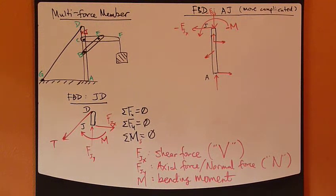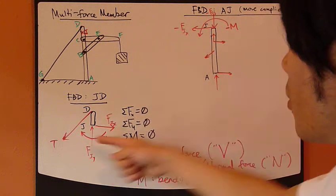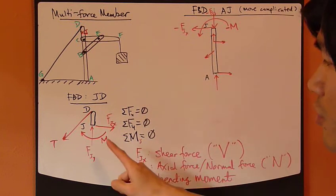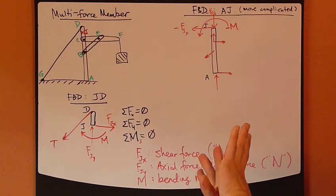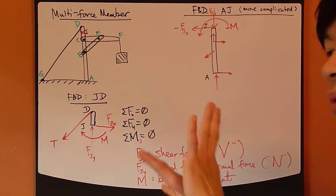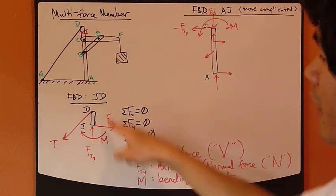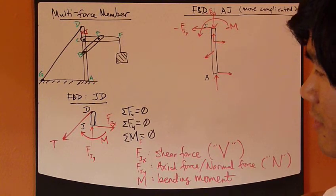M is called bending moment. It's a resistance to any kind of potential rotation or bending of this piece, this rigid body.